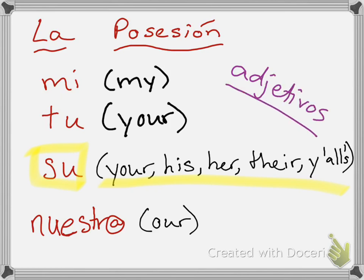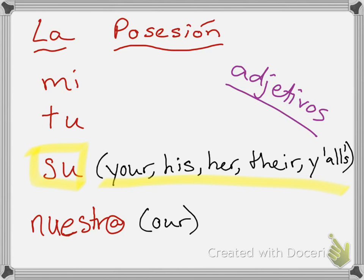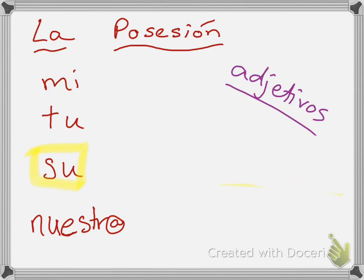Now this is important. These are adjetivos — adjectives. And the reason that's important is because in Spanish we have what I like to call the a/s/as rule, meaning that if my noun ends in an 'a' or an 's,' my adjectives also need to end in that 'a' or 's.' So if I'm talking about something that is plural — for example, my shoes, zapatos — because zapatos is plural, 'mi' needs to become plural. So it becomes 'mis zapatos.'